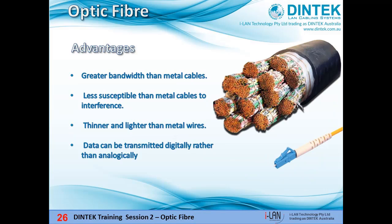Optic fibre has several advantages over traditional communication lines. They have much greater bandwidth than metal cables, meaning they can carry more data in a much smaller cable. They are less susceptible to interference — because they're made from glass they don't suffer from induced electromagnetic fields. Fibre optic cables are much thinner and lighter than metal wires, making them a logical choice for aircraft where weight and space are critical. And data can be transmitted digitally — the natural form for computer data — rather than analogically.